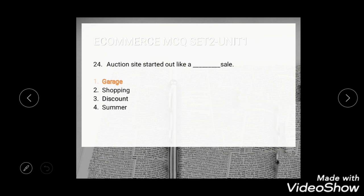Question 22: Auction sites started out like a dash sale. Options are garage, shopping, discount, and summer. The correct answer is garage sale.